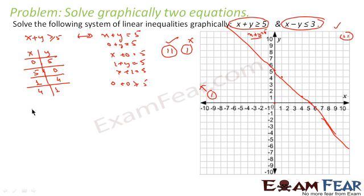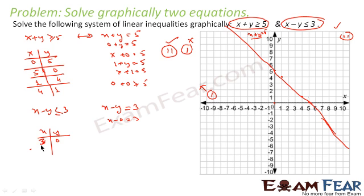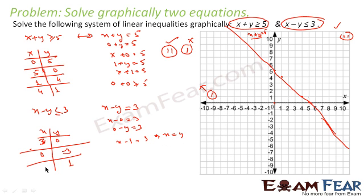The second equation is x minus y is less than 3. To create the graph we draw the line x minus y is equal to 3. Taking y equal to 0 gives x equal to 3, and taking x equal to 0 gives y equal to minus 3. Taking y equal to 1, x minus 1 equals 3, so x equals 4, giving the point (4, 1). So we have three points: (3, 0), (0, -3), and (4, 1), and we form this graph.